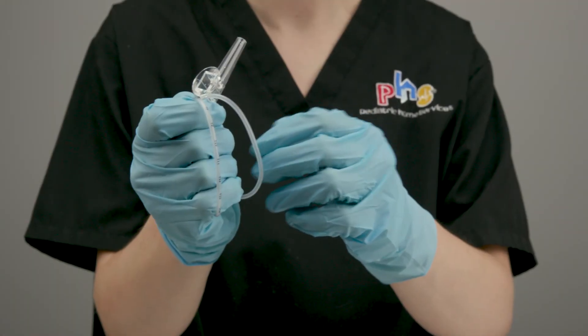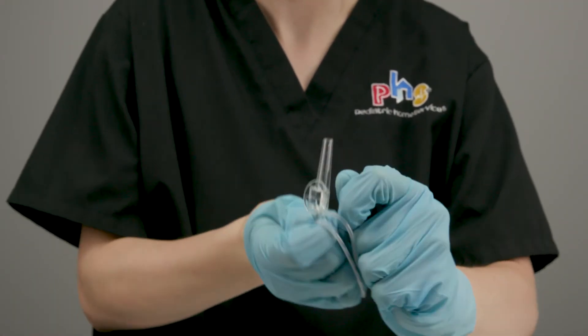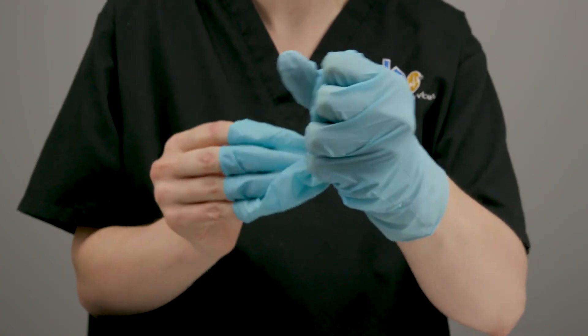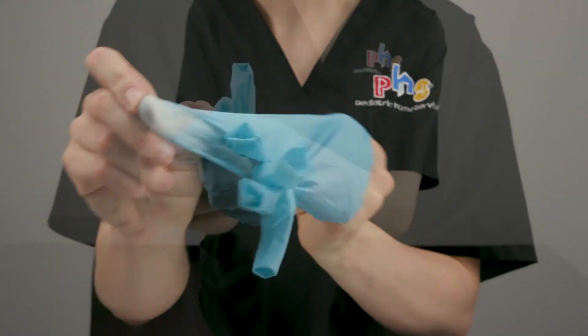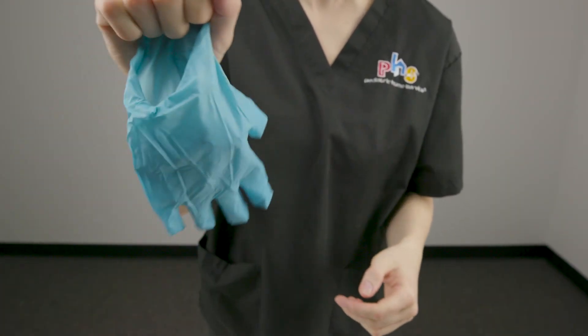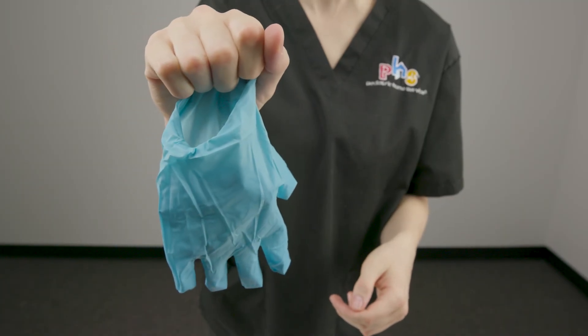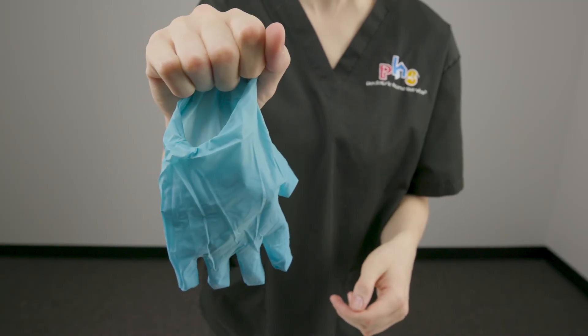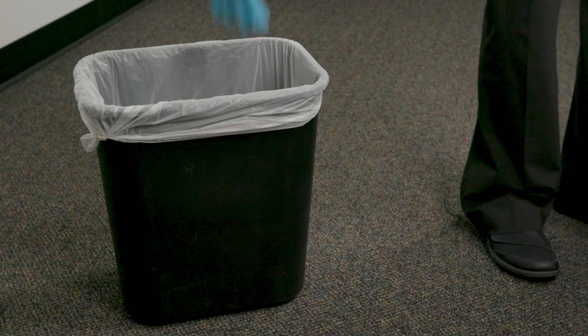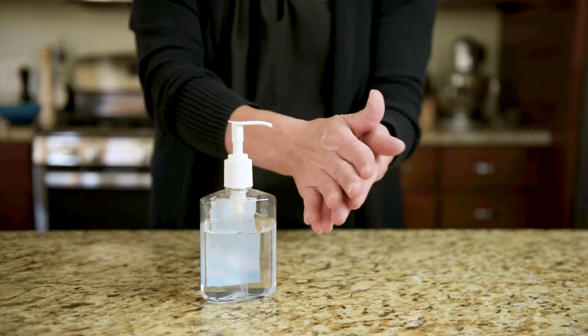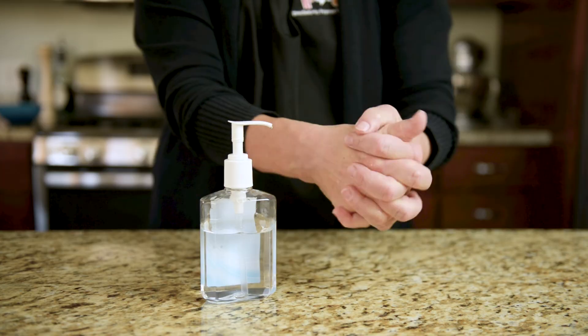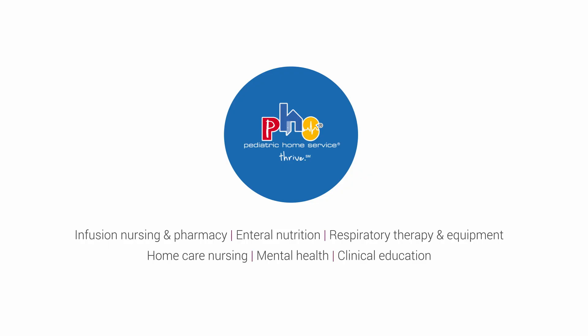Remove the glove on the hand with the suction catheter so that the catheter stays inside the glove. Hold the glove and catheter in your other hand. Remove the other glove so that you contain all waste inside one glove. Put the gloves and catheter into the trash and clean your hands.